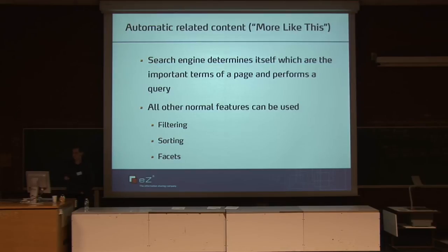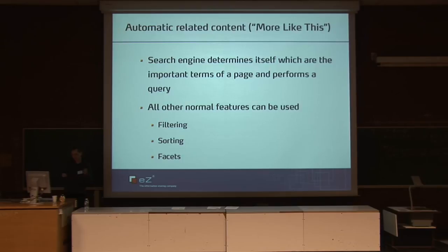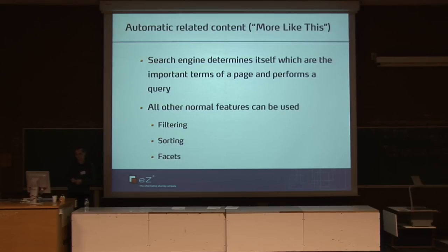Another nice feature, with quite some heuristics, is automatic related content. This is used by more and more large news sites like the BBC, and it tries to correlate articles that exist with the page you are currently viewing. It uses heuristics to perform a query in the background and assembles results for returning a normal search without user interaction. All the features from Solr can be used here — filtering, sorting, and also facets. It's really, really powerful, though it requires some tuning and experimentation before it functions the way you want.